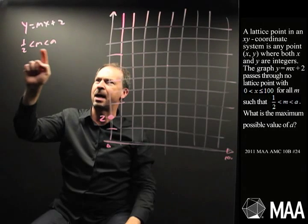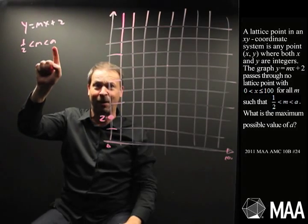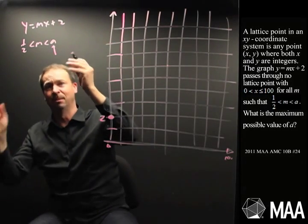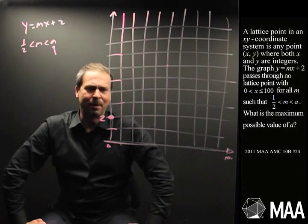Alright. But, for all value m such that half is less than m is less than a. Alright. So, m could be, okay, there's a whole bunch of lines, different values of these lines. And slope is between a half and something that I'm meant to figure out. What's the biggest possible value? Okay. I'm meant to figure out a. I want to make a as big as possible.